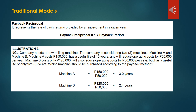Now let us try to solve this illustration. NGL Company needs a new milling machine and is considering two machines — Machine A and Machine B. Machine A costs $150,000, has a useful life of 10 years, and will reduce operating costs by $50,000 per year. Machine B costs $120,000, will also reduce operating costs by $50,000 per year, but has a useful life of only 5 years. Using the payback method formula — Net Initial Investment ÷ Annual Net Cash Inflow — Machine A: $150,000 ÷ $50,000 = 3 years. Machine B: $120,000 ÷ $50,000 = 2.4 years.